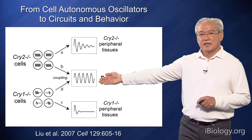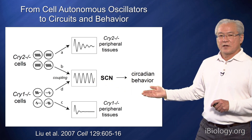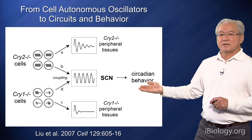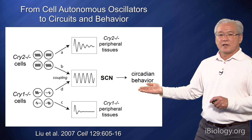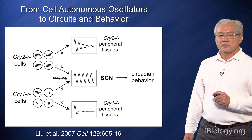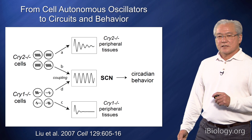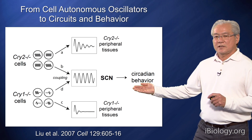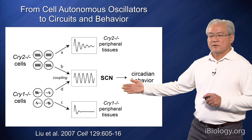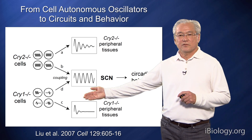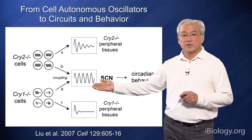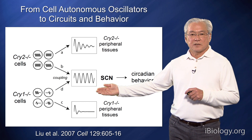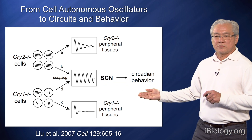Interestingly, because the SCN then regulates circadian behavior, we can see that at the behavioral level the cry1 mutant is also rescued. These experiments are important because they show that circadian behavior is really not a direct reflection of the cell-autonomous oscillator. Information at the cell-autonomous level can be transformed by the SCN network to rescue that function, which then in turn rescues circadian behavior.